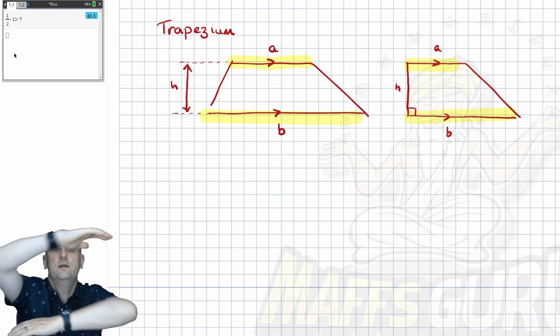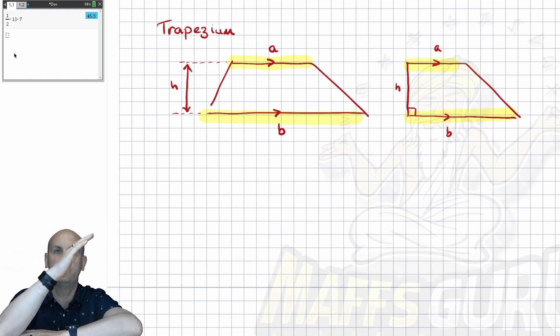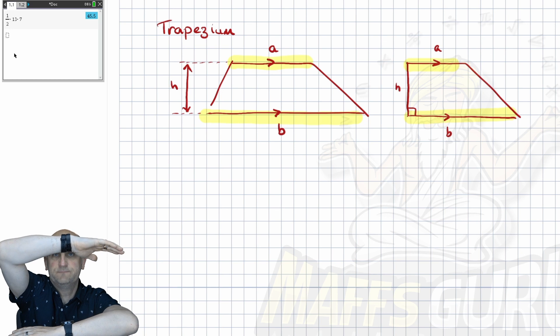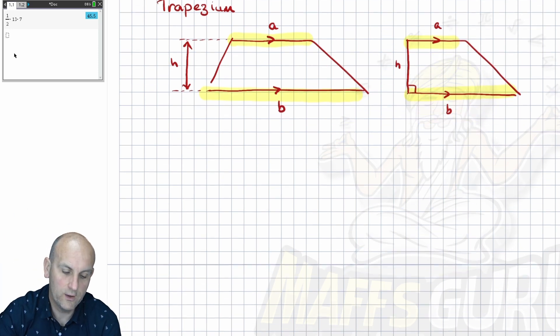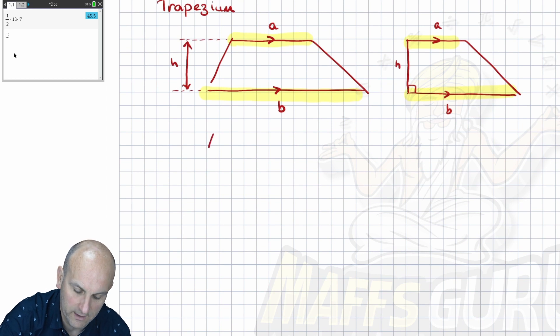Now, how do I do this? Add times half. Add the parallels, times by how far apart they are, and then half your answer. Because it's got a bit of a triangle slopey bit.